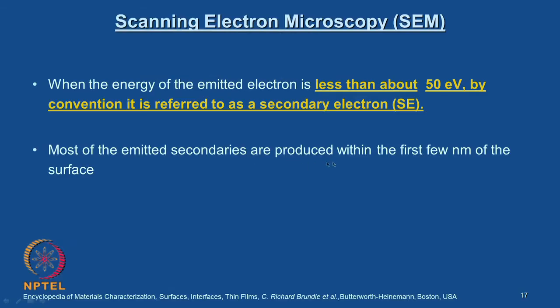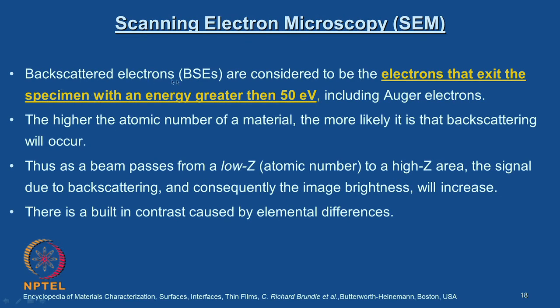When the emitted electron has energy less than about 50 electron volts, by convention it is referred to as a secondary electron. Most of the emitted secondaries are produced within the first few nanometers of the surface. Backscattered electrons are considered to be electrons that exit the specimen with an energy greater than 50 electron volts, including Auger electrons. The higher the atomic number of the material, the more likely it is that backscattering will occur.